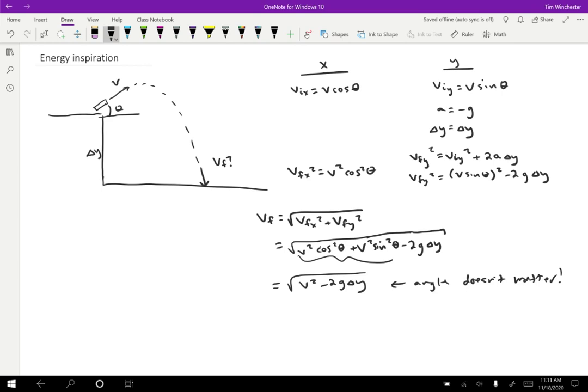So ordinarily, when you notice something like this, a result that doesn't depend on something that seems like it should depend on, usually we expect that there's a reason for it. And in fact, we'll see that there is a reason for it. And the reason has to do with energy, which is the topic of this chapter.